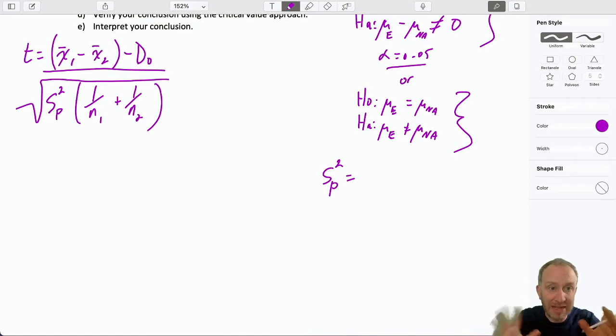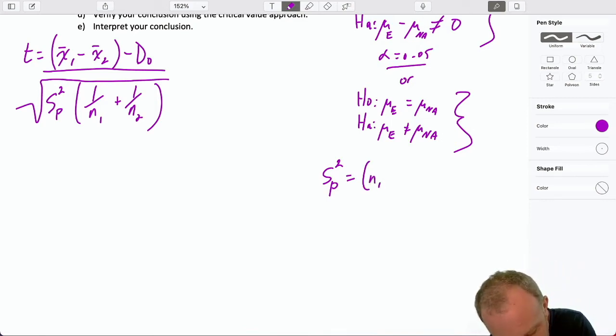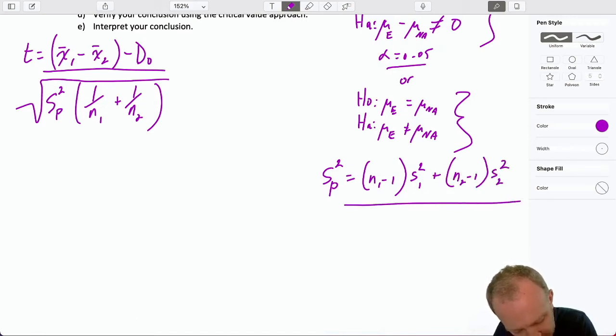I know earlier, I said, making this assumption about the equality of variances simplifies things. And yet, here, I'm showing you this additional calculation that needs to be done. Believe me, this additional calculation that needs to be done is still simpler than if we assume unequal variances. You'll see the ugliest formula that you will have seen up until this point in these videos. So this pooled estimator is just N1 minus 1 times that first variance plus N2 minus 1 times that second variance divided by N1 plus N2 minus 2.